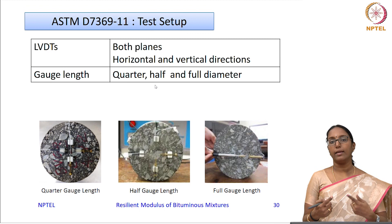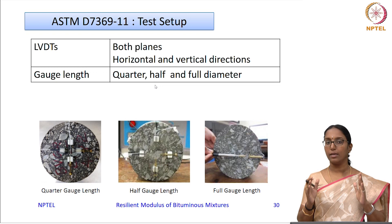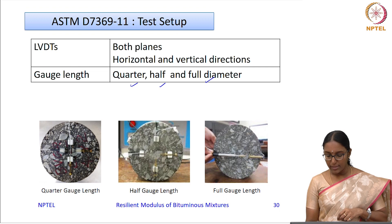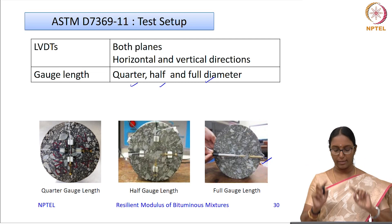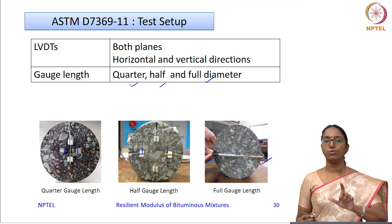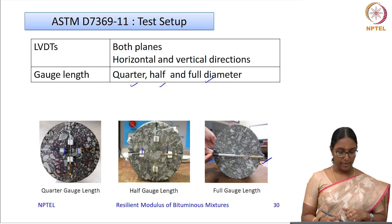Regarding gauge length, using the total diameter as the gauge length can be problematic. The new standard suggests three different gauge lengths: a quarter gauge length, half gauge length, and full diameter. The LVDT can be connected for the full diameter, the middle half portion, or the middle quarter portion. These three gauge lengths can be suitably chosen.